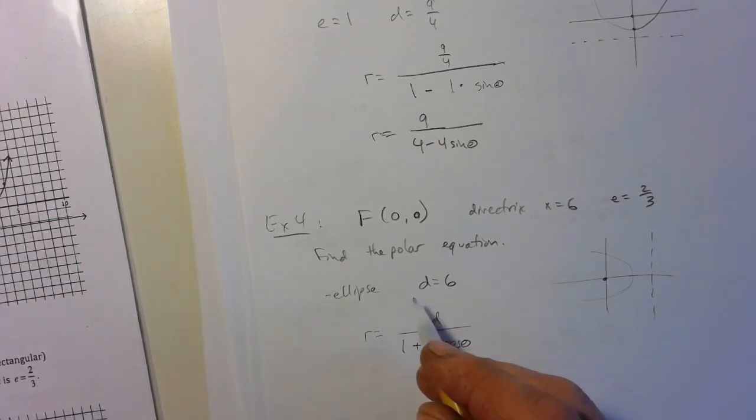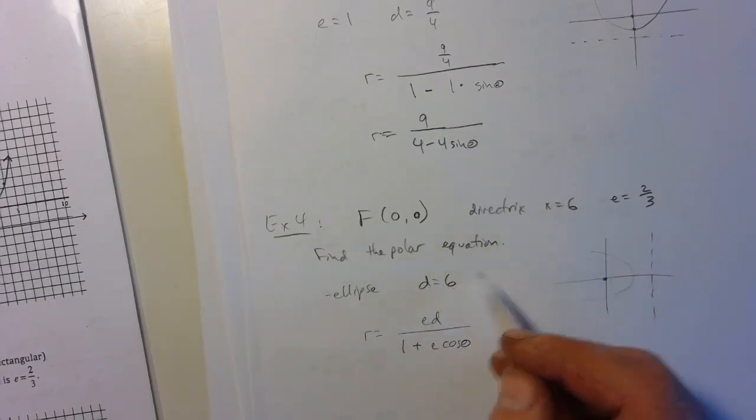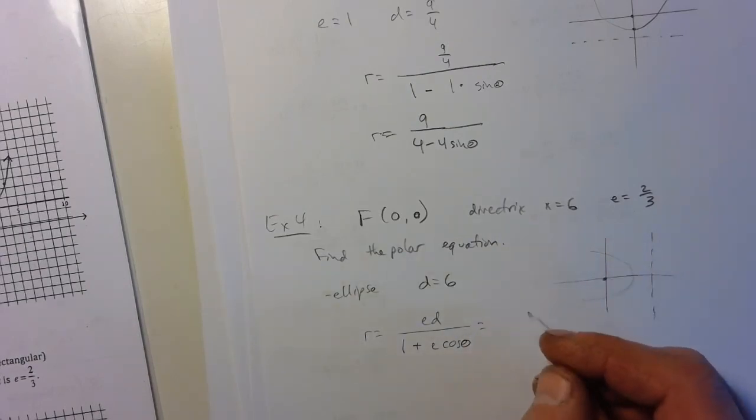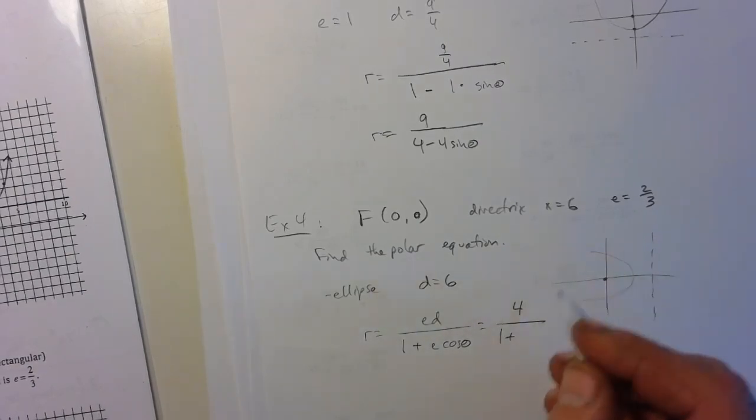And so then we have e and d, right? So if we multiply those two together, what are we going to get? We're going to get four for our numerator. Get four for our numerator. E is two-thirds, cosine theta.